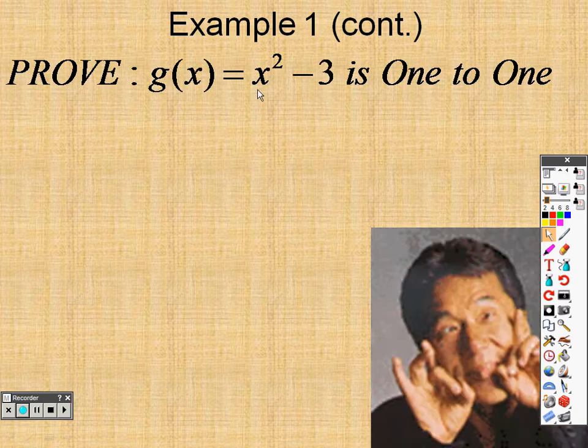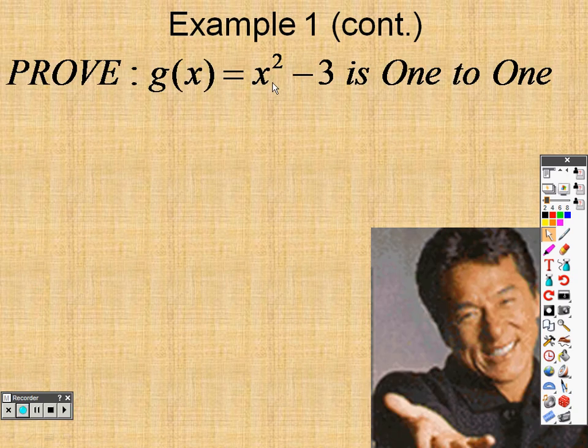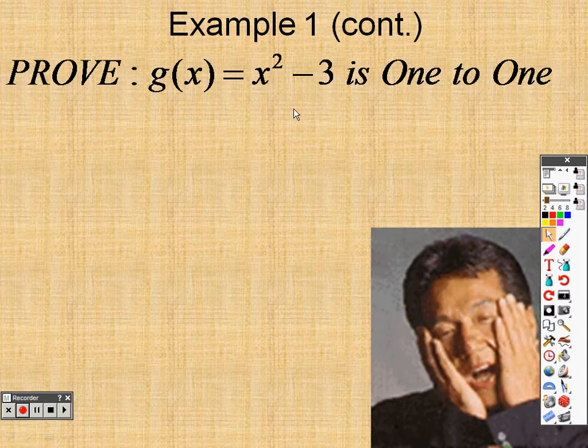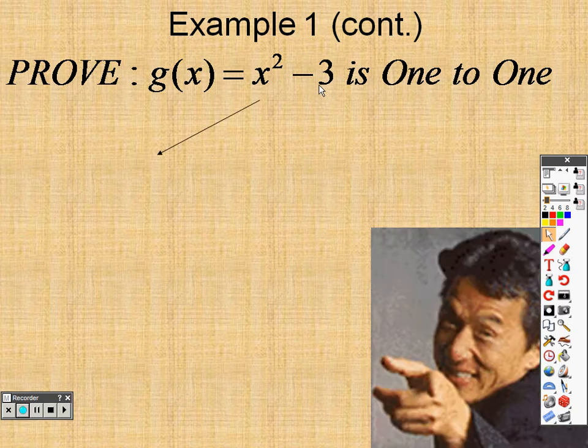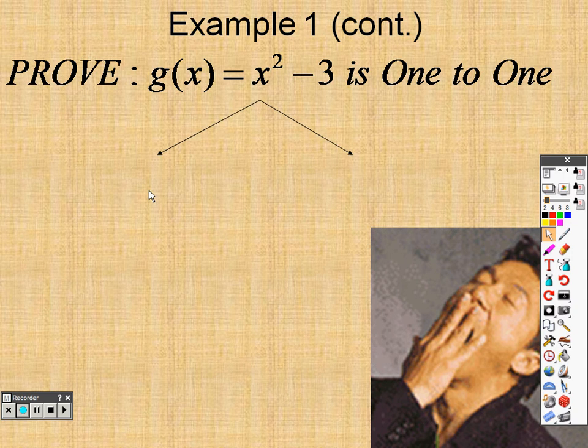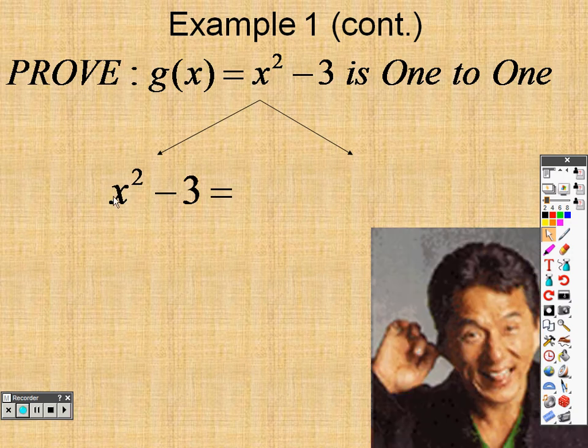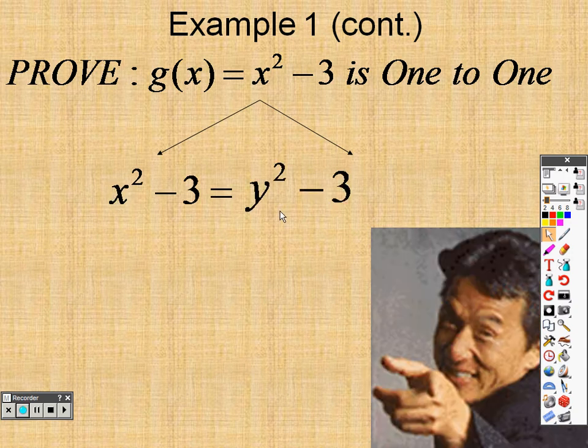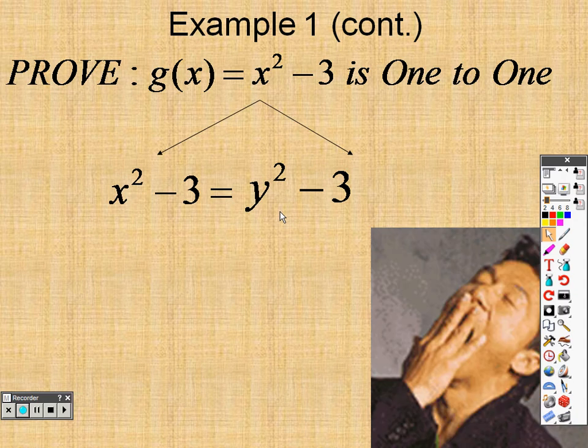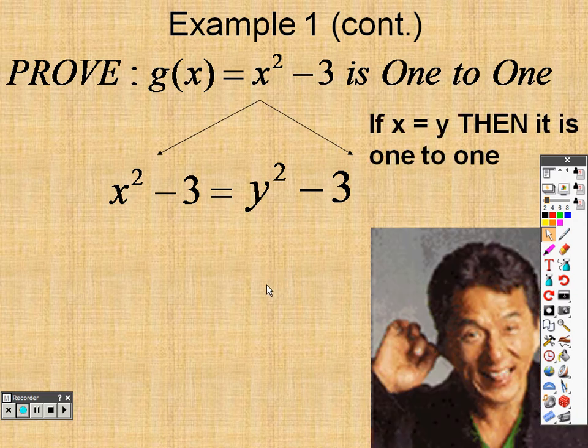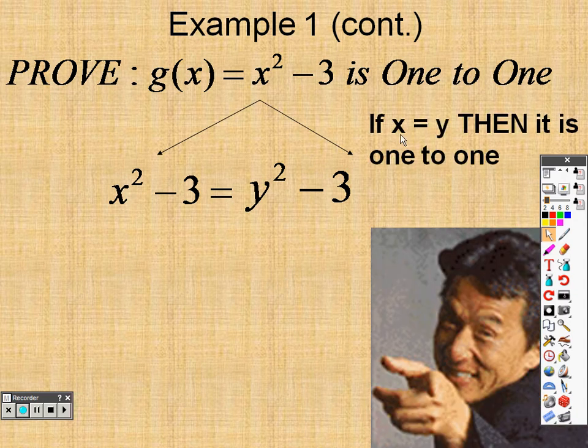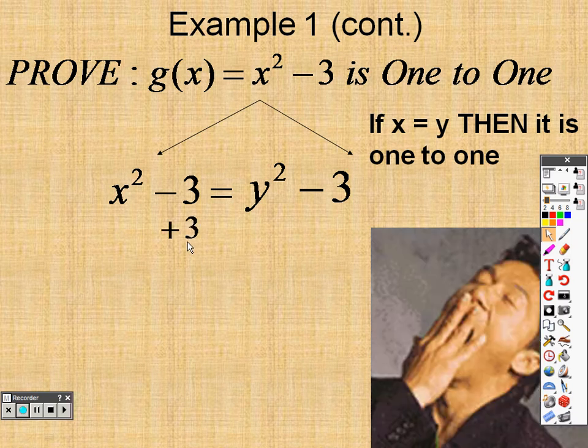So now we take a look at this one, X squared minus 3. Is it one-to-one? So, like we said before, we need to separate this. So X squared minus 3 goes over here, and I take out the X, and I put a Y in its spot. So it's Y squared minus 3. So to solve this, I would do what I did before, because I'm trying to prove that X equals Y. So I would add 3 to both sides.